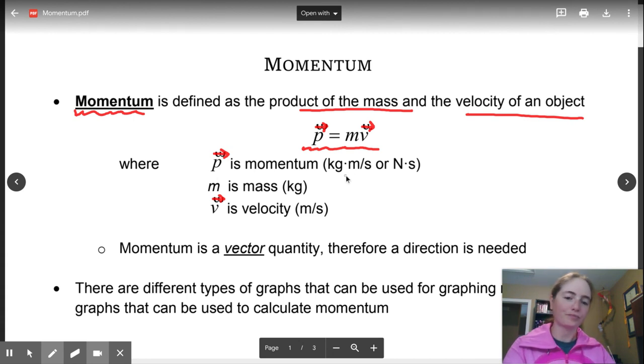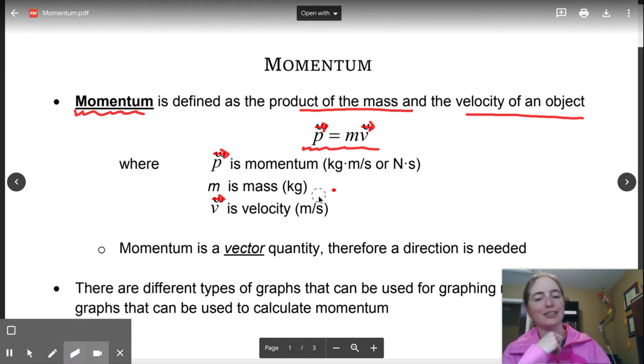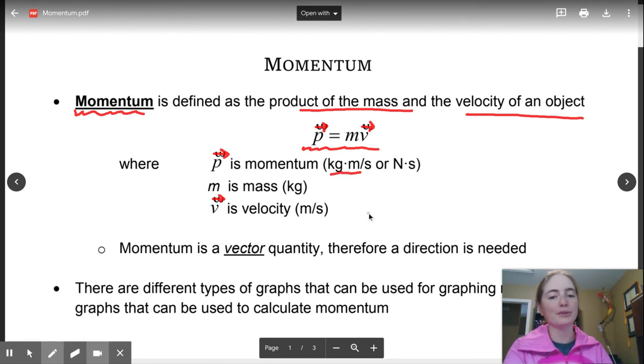So P is your momentum. There are two sets of units: kilograms times meter per second, or a Newton second. M is mass in kilograms, V is velocity in meters per second.